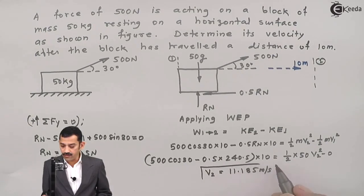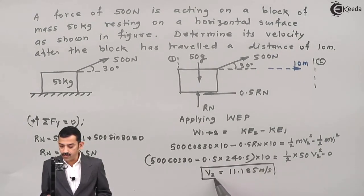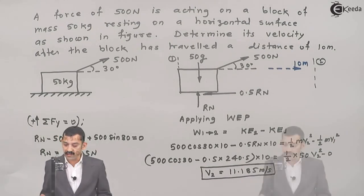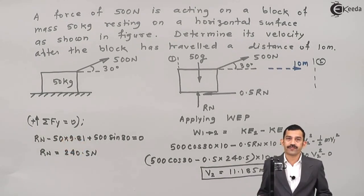This is the final velocity of block when block moves in rightward direction a distance of 10 meters. Thank you.